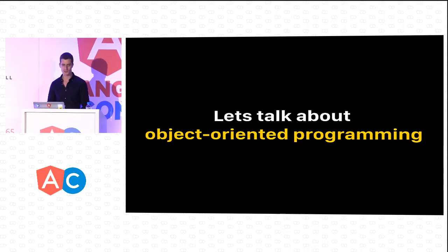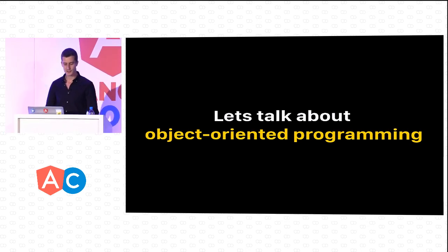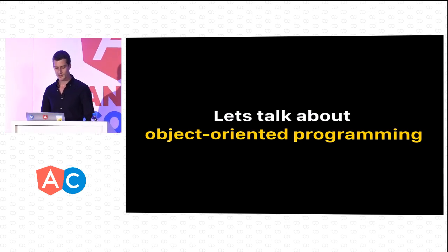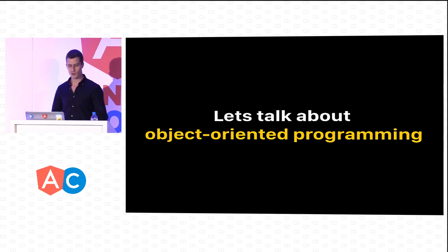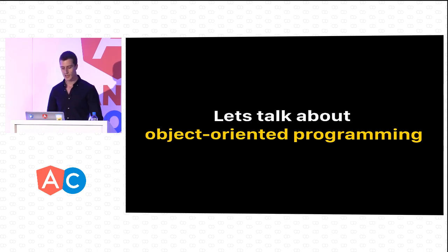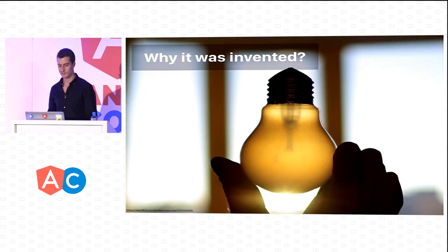This talk is going to be mostly about aspect-oriented programming — what it actually is, how we can take advantage of it, and what problems in object-oriented programming it solves. In order to get a better understanding of those problems, let's take a step back and look at some history.